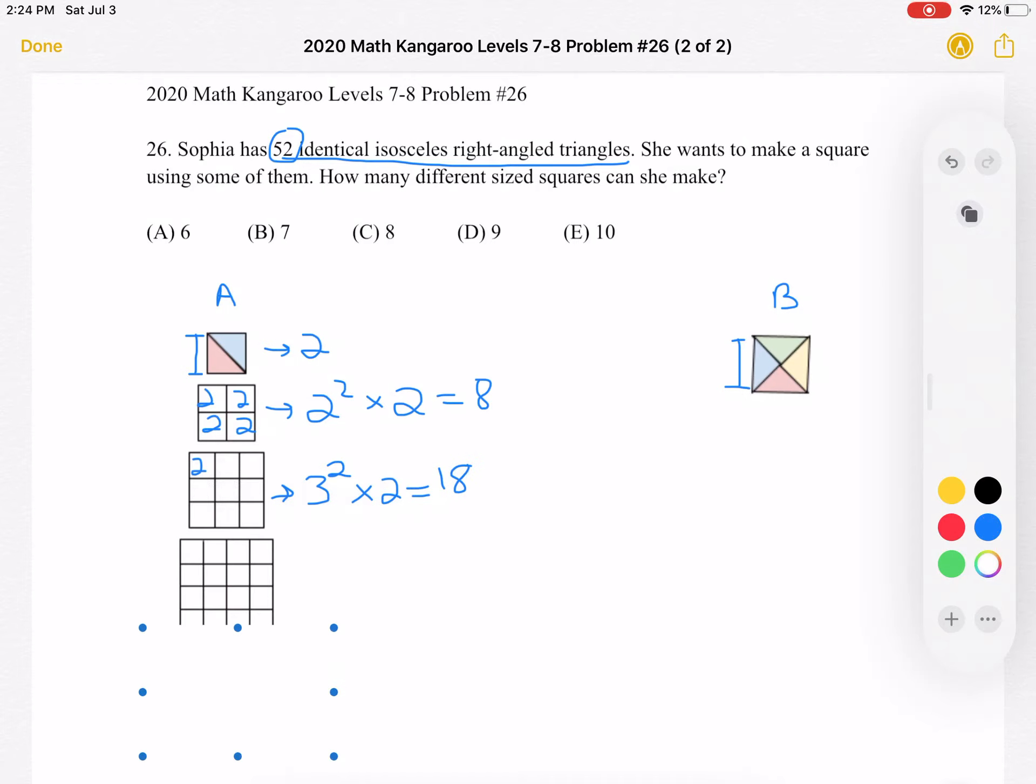Then, in a 4x4 figure, again, each one has 2. So, we have 4 squared, 16 unit squares, times 2 isosceles per square. It's a total of 32.